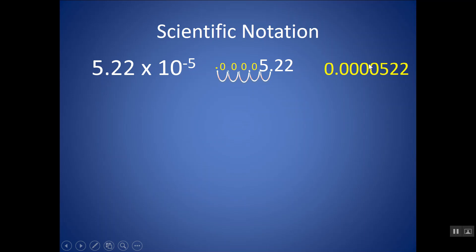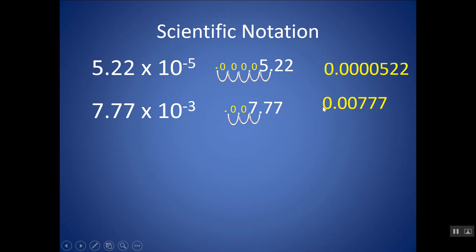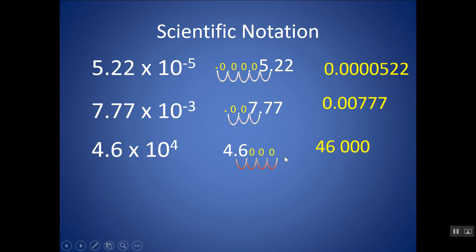Another negative exponent means a number smaller than 1. Moving the decimal to the left — one place, then put a 0 where there's nothing, then another 0 — that's three places, giving 0.00203. Now a positive exponent creates a number larger than 1, so we move this decimal four places to the right. Any time there's nothing there, put in a 0. That gives us 46,000. Feel free to put a comma or not.